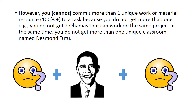However, on the other side of the coin, you cannot commit more than one unique resource to a task, because you only get one unique thing. For example, two Obamas can't work on the same project at the same time — something would be wrong. I say 'cannot' in brackets, because garbage in, garbage out — you can of course input it, but then it becomes over-allocation of resources.